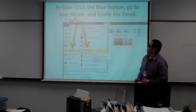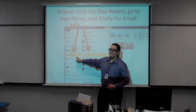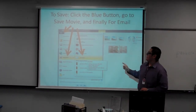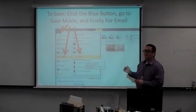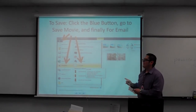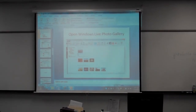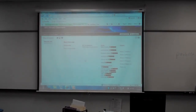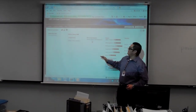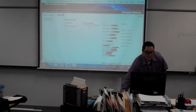Once you've finished, click up here on this little blue icon, go all the way down to save movie, and click on for email. Save it as photo story 1, first name last initial, for the one you're doing today. For tomorrow, save that one as photo story 2, first name last initial. This PowerPoint is located on Virtual Classroom — open that up so you can go through the steps one by one. If you have any questions just let me know.